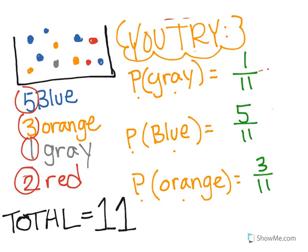Here are your answers: there's only one gray, so it's 1 over 11. Five blue over 11 total. Three orange over 11 total. Notice how 11 is always on the bottom — that's how it is with probability, the total number always goes on the bottom.